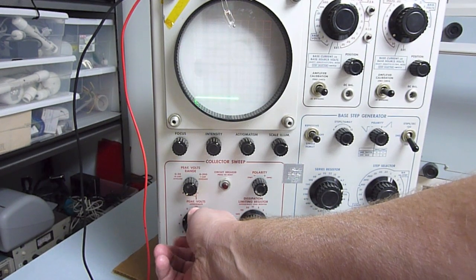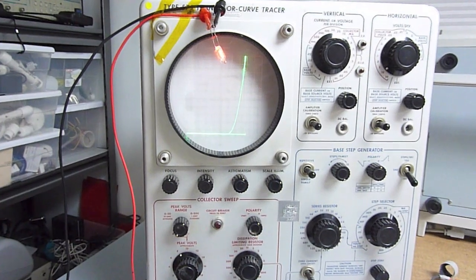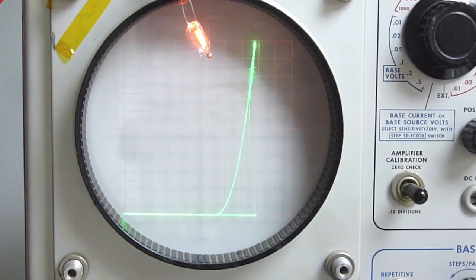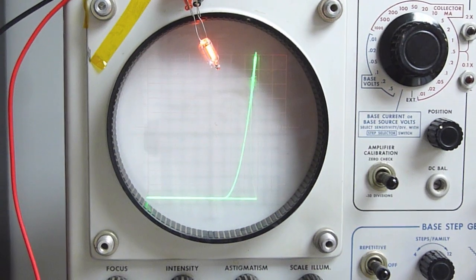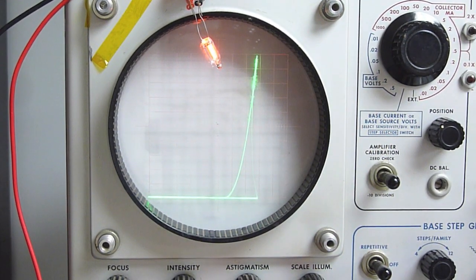We're going to curve trace a neon bulb here. Let me zoom in. The vertical axis is the current going through the bulb, about 10 milliamps. The horizontal axis is the voltage going into the bulb.